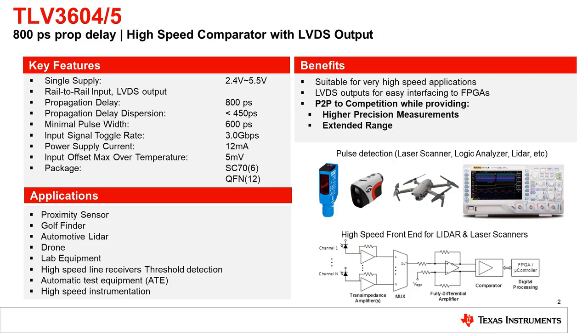A great comparator option for time of flight systems is Texas Instruments TLV3604, our newest high speed comparator with LVDS outputs. The device has just 800 picoseconds of propagation delay and a high toggle frequency of 1.5 GHz. Its narrow pulse width detection capabilities of 600 picoseconds and input overdrive dispersion of just 450 picoseconds make it a great option as a receiver in optical time of flight systems.